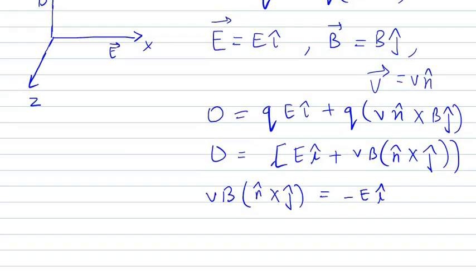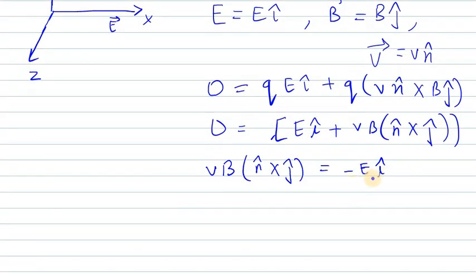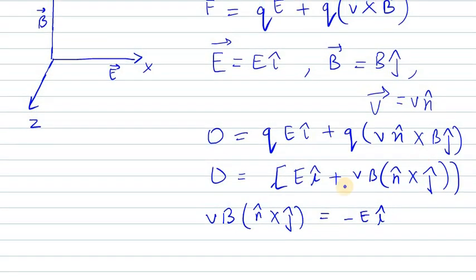Now we have n̂ × ĵ on one side and -E î on the other. We need to find the value of n̂ to form î. We can take k̂ because k̂ × ĵ = -î.